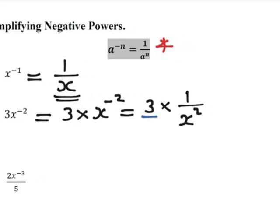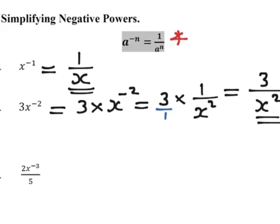And you need to think of this 3 as being 3 over 1, so you get 3 times 1 is 3, 1 times x squared is x squared, and that would be the answer.